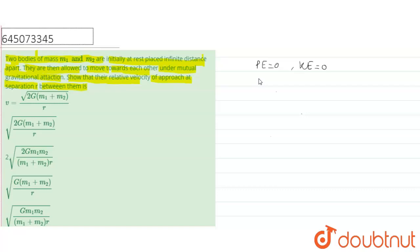Now when they are r distance apart, then we can use conservation of energy. Initial energy is zero, which is equal to minus potential energy when they are r distance apart.